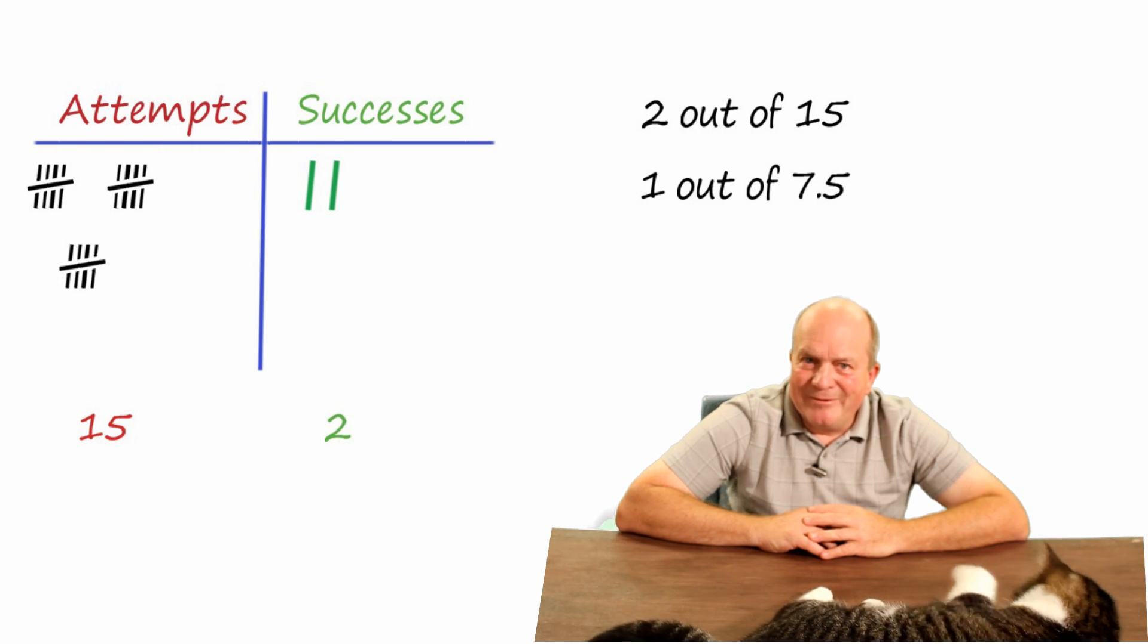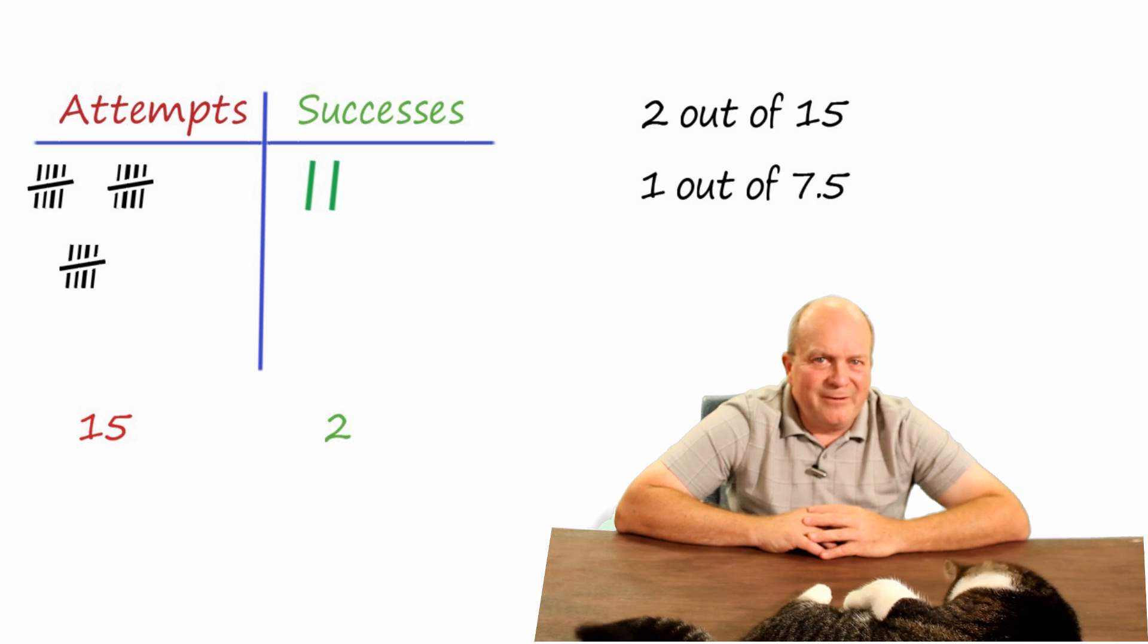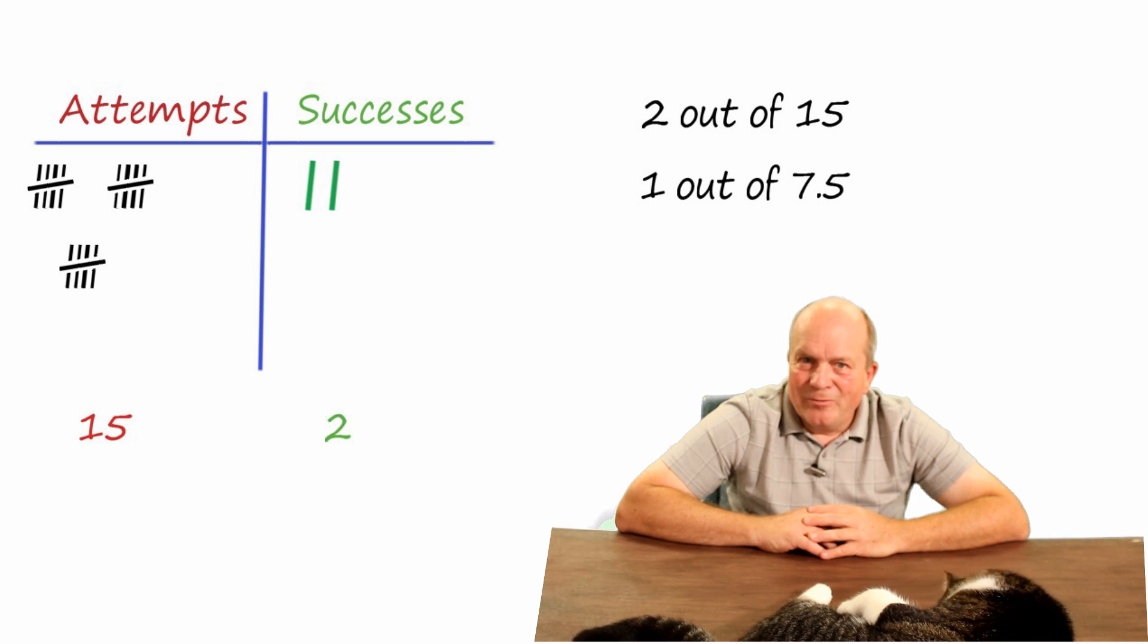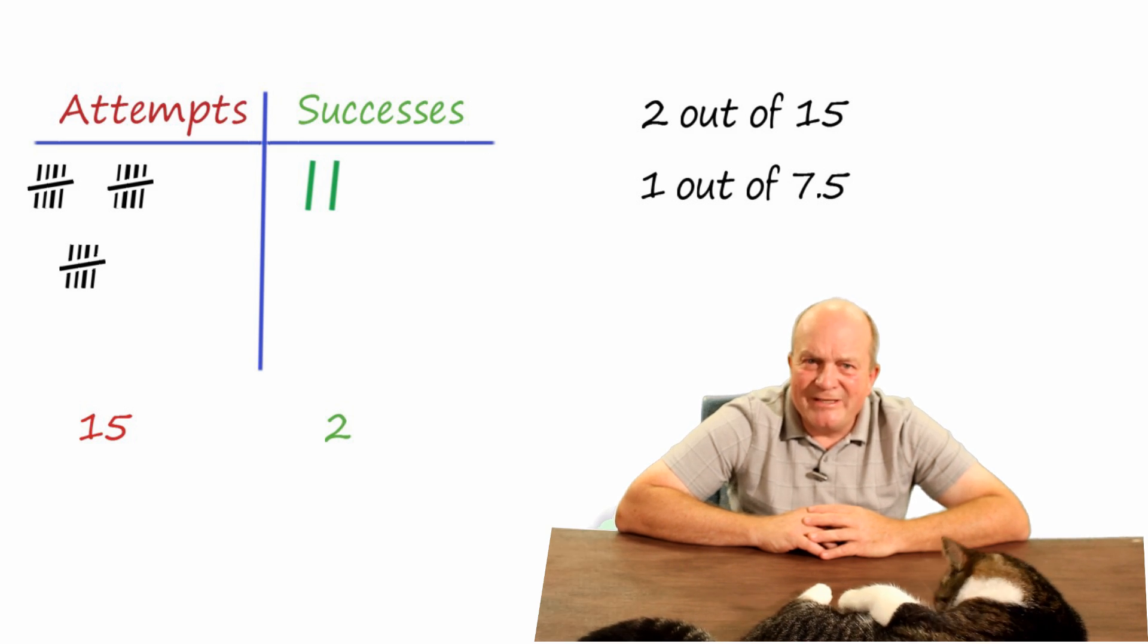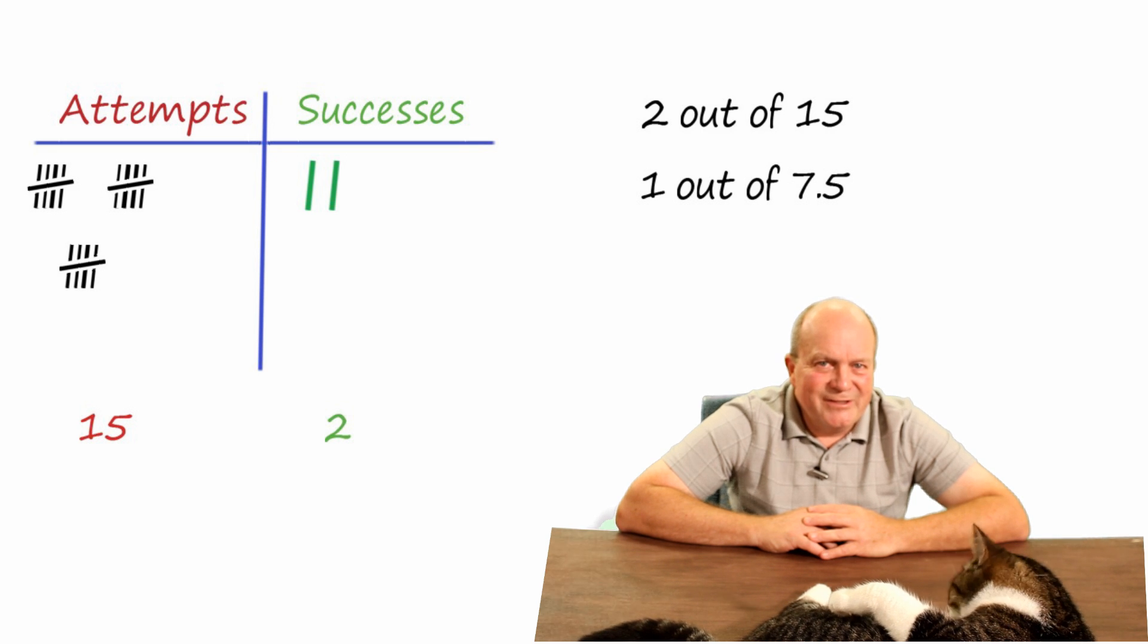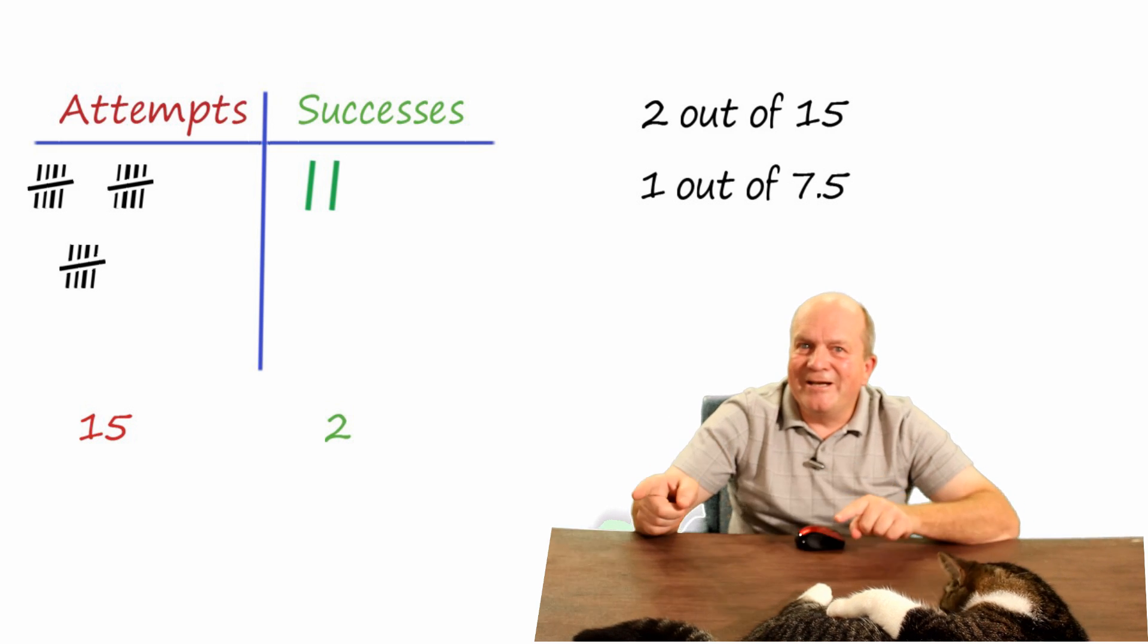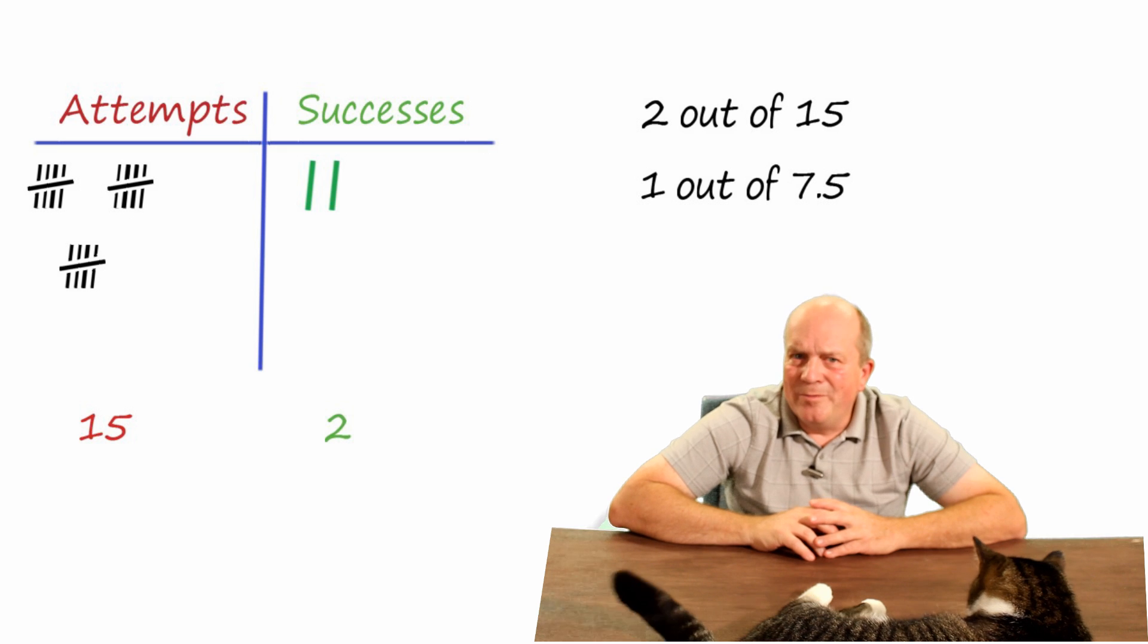What I'd like you to do now is take the bottle flip challenge. Write in your generalized version of experimental probability. How many attempts did it take for you on average to land the bottle upright? And write it in the comment section and we'll compare them. We may even give out winners for the best score.